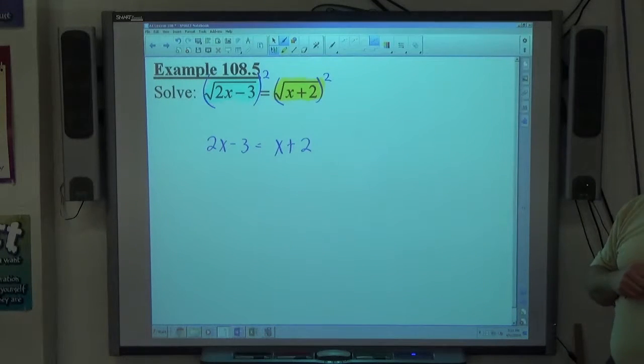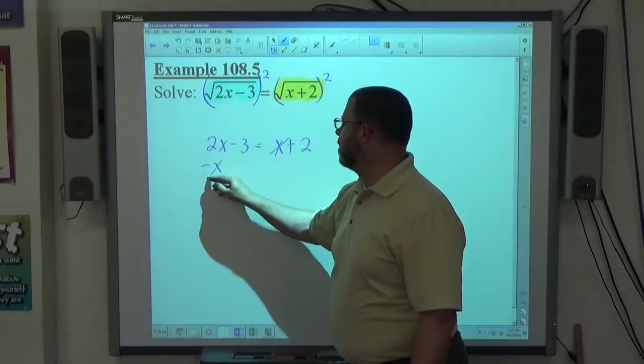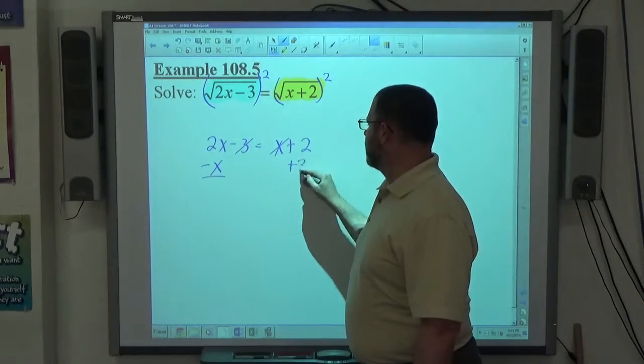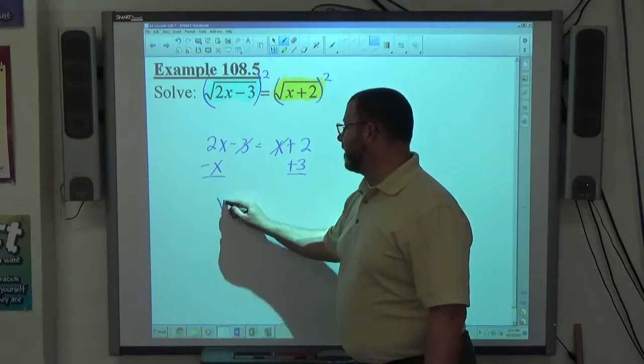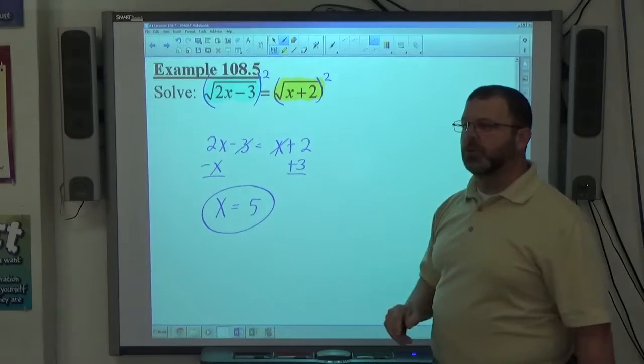So 2x minus 3 is equal to x plus 2. Now we need to solve for x. If I move the x to the left, I'm going to get minus x. Move the 3 to the right, it becomes plus 3. 2x minus x makes x. 2 plus 3 makes 5.